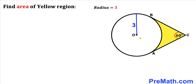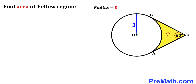Welcome to Premath. In this video we have a circle with radius 3 units, such that line segments AC and BC are tangent to the circle. Moreover, this angle ACB is 60 degrees, and we are going to calculate the area of the yellow shaded region.